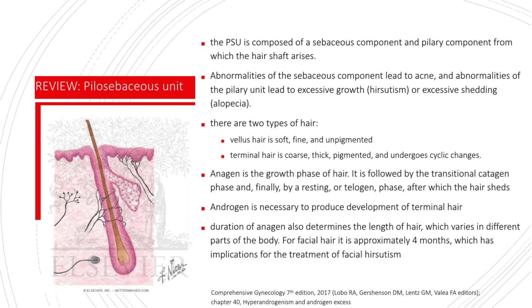Basically, there are two types of hair. The vellus hair is soft, fine, and unpigmented, while the terminal hair is coarse, thick, pigmented, and undergoes cyclic changes.